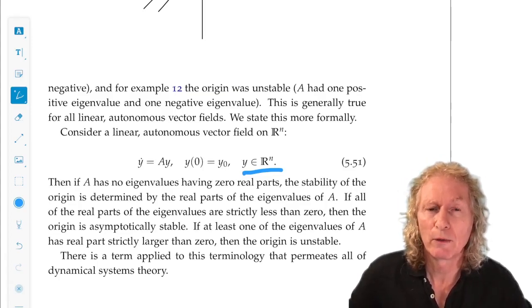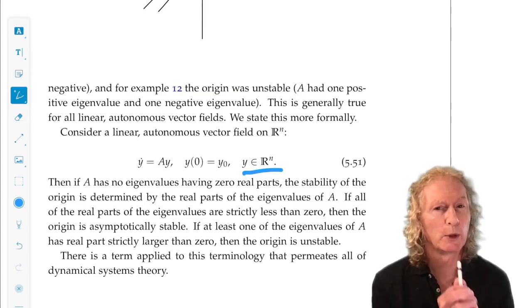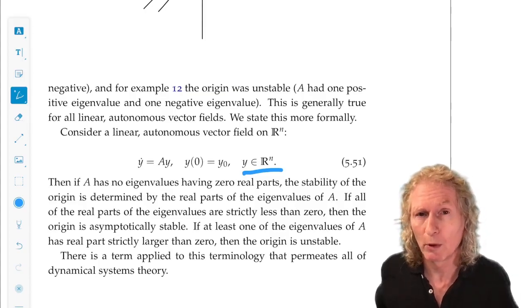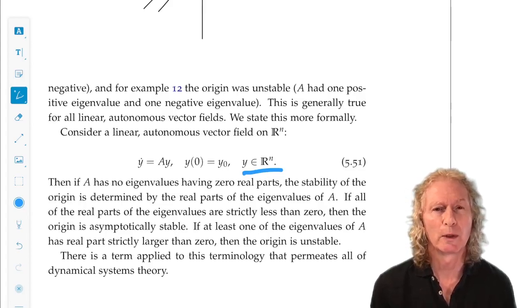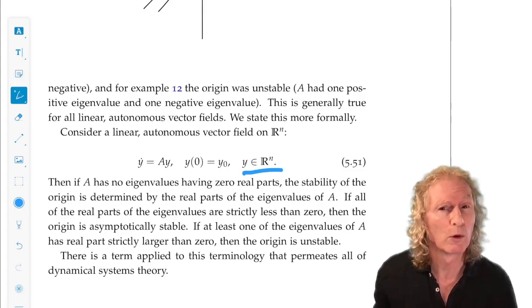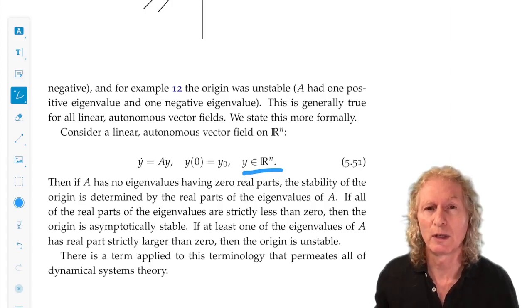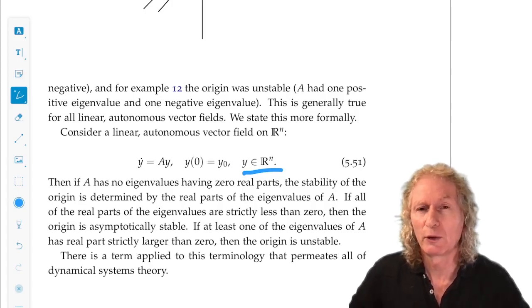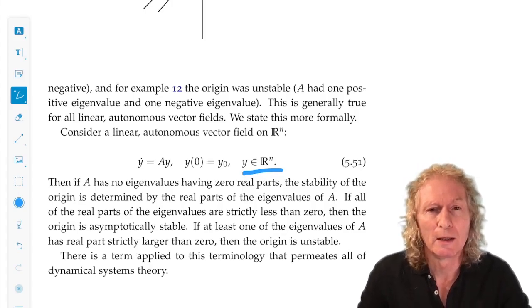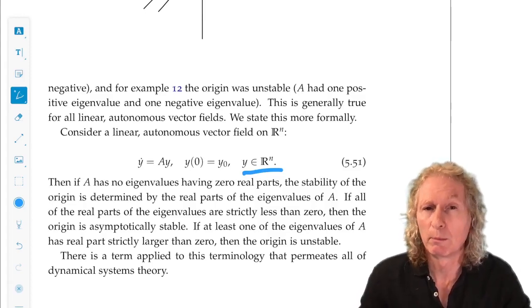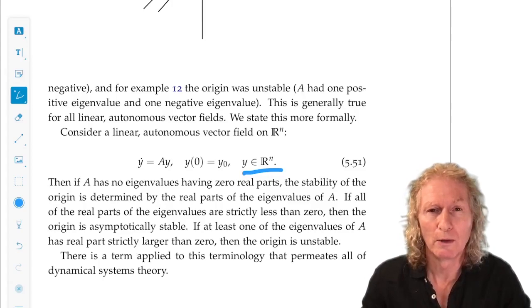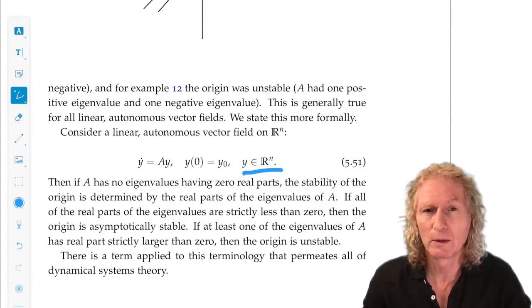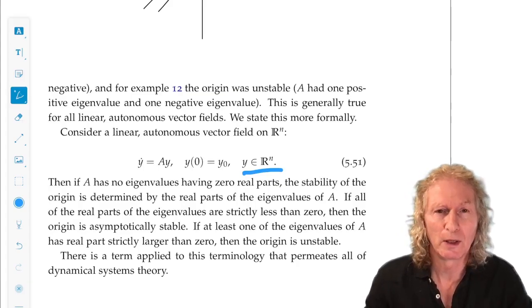If all the eigenvalues are purely imaginary, zero real part, then the origin—we have examples for which it could be either stable or unstable. In fact, in the last chapter, in the last two problems, we had a two-dimensional system. Both eigenvalues are zero, but in one example, the origin was Lyapunov stable, and in the other example, it was unstable.